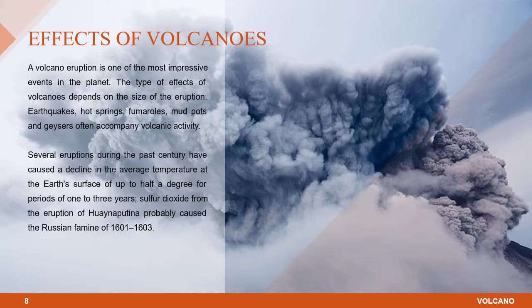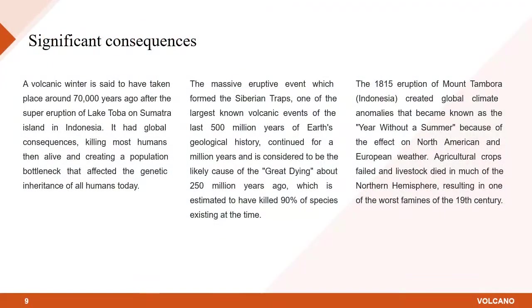Sulfur dioxide from a major volcanic eruption probably caused the Russian famine of 1601 to 1603. Volcanoes have had significant consequences on human history. A volcanic winter is said to have taken place around 70,000 years ago after the super eruption of Toba on Sumatra Island in Indonesia. It had global consequences, killing more humans than survived and creating a population bottleneck that affected the genetic inheritance of all humans today.